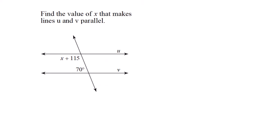Find the value of x that makes lines u and v parallel. For the lines to be parallel, these two angles are supplementary, adding up to 180. So x plus 15 plus 70 equals 180. I'll subtract 70 from both sides. 180 minus 70 is 110, so x plus 15 equals 110.